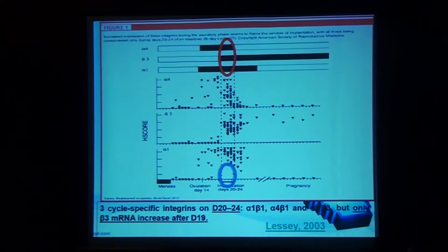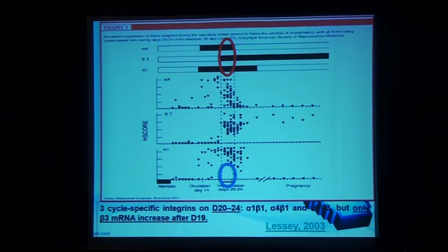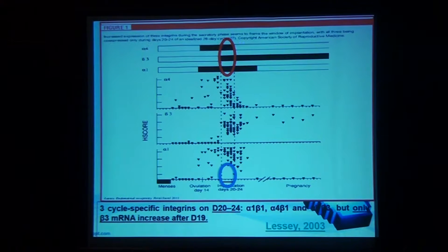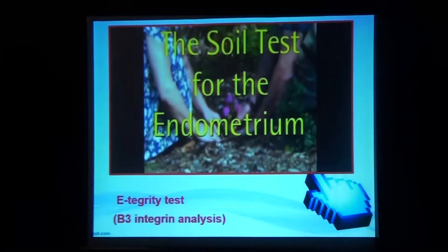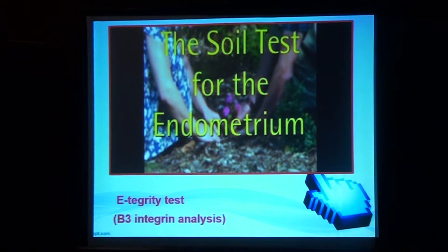Integrin families are three: alpha-1 beta-1, alpha-4 beta-1, and alpha-V beta-3. What's interesting is that all three integrins are abundant around the implantation window from day 20 to 24. However, alpha-V beta-3 specifically starts to be expressed with the opening of the window of implantation around day 20. Therefore, alpha-V beta-3 measurement has been named as the 'soil test' — to see whether the endometrium is favorable for implantation or not.